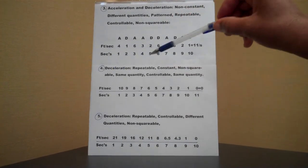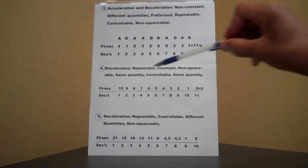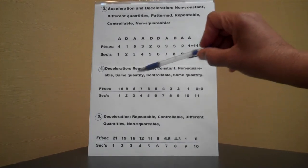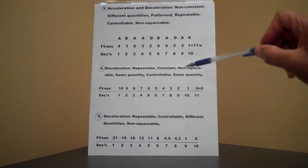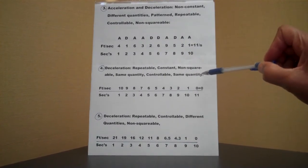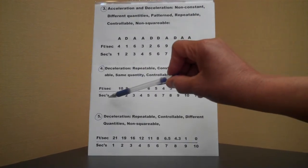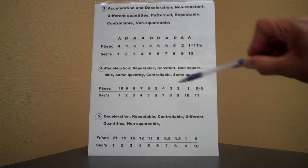Deceleration. It's repeatable, constant, non-squarable, same quantity, controllable. Same quantity, controllable. I wrote same quantity twice, but nonetheless, it's feet per second, and it's seconds, ten, eleven seconds in this case.